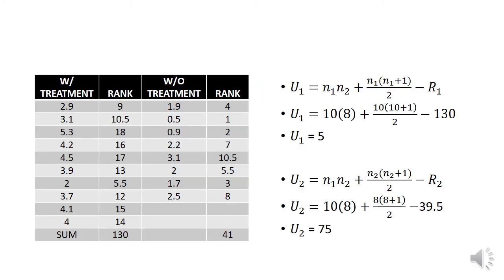Here we have combined our data for with treatment and without treatment. Then rank the observations from the lowest value to the highest value of both groups. After ranking, we assign the rank to the respective observations and then we have added the ranks of group 1 and then added the ranks of group 2. Then using the formula, for U1 we have 5 and for U2 we have 75.